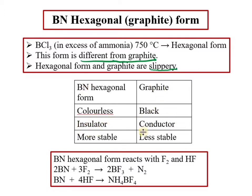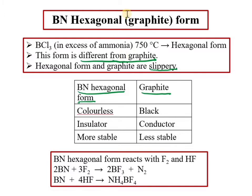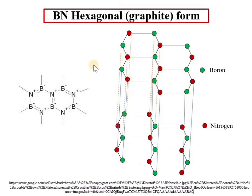Hexagonal BN is more thermally stable than graphite. In terms of reactivity, hexagonal BN reacts with F₂ and HF. Structurally, in the hexagonal form, boron and nitrogen atoms are alternately hexagonally packed in layers, with B and N atoms alternating within each layer, and multiple such layers stacked on top of each other.